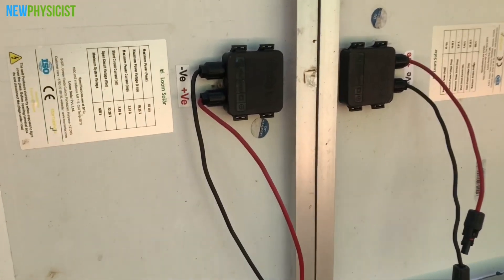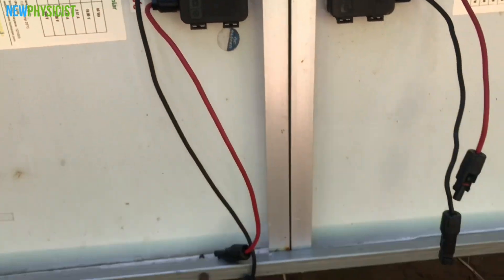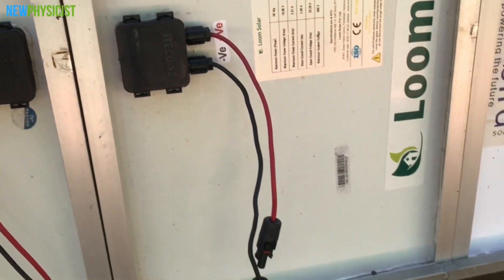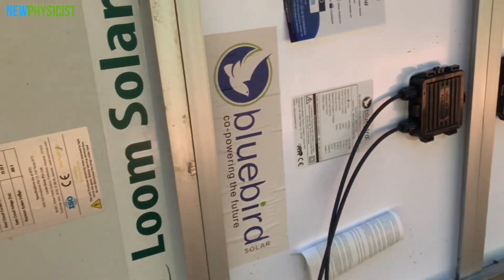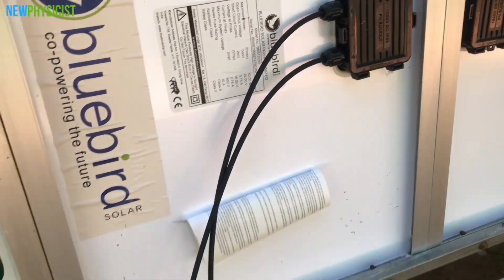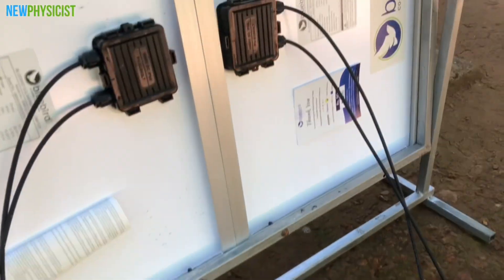Since we are building a 12 volt system using a PWM charge controller, we have to connect all the four panels in parallel so that we will get a VOC of 22 volt and a combined ISC of around 8 amps.